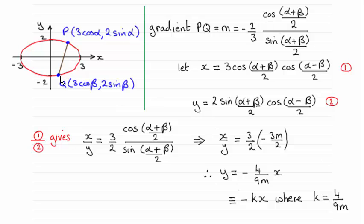And we had to show that the center of the chord had an equation of the form Y equals minus KX and work out what K was in terms of M. And you can see that it turns out to be 4 over 9M. So how do we get this result?